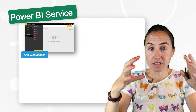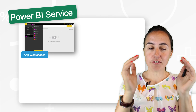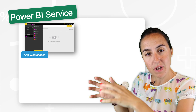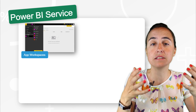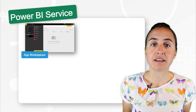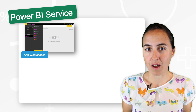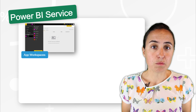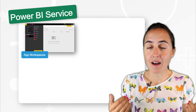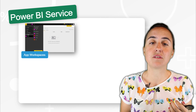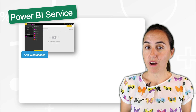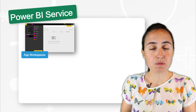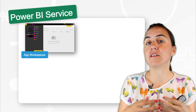Workspaces are basically a container for all your reports. When you publish a report from Power BI Desktop into Power BI Service, you will be asked where you want to publish — which workspace you want to use. By default there is one installed called 'My Workspace,' which is your personal workspace, so whatever you publish there nobody else but you can see. If you want to share reports with somebody else, you have to create a new workspace.